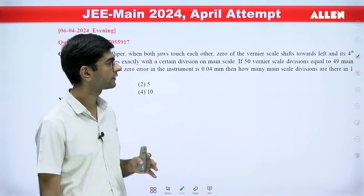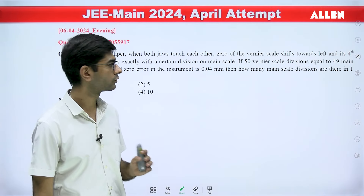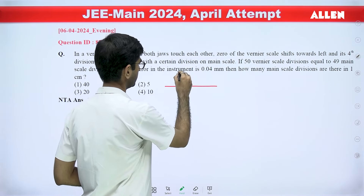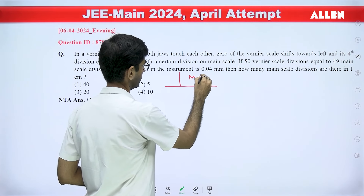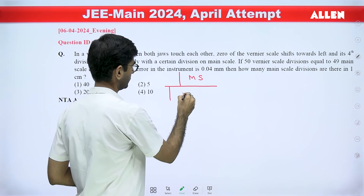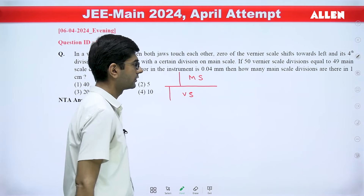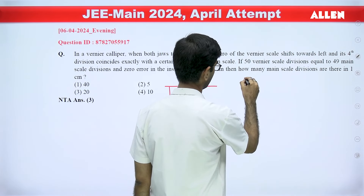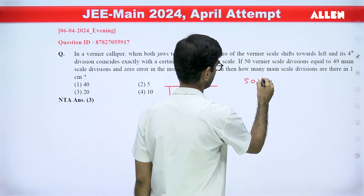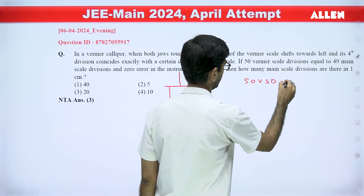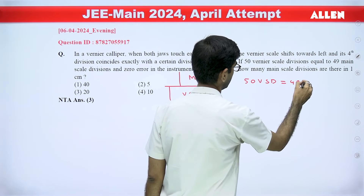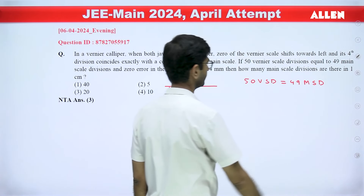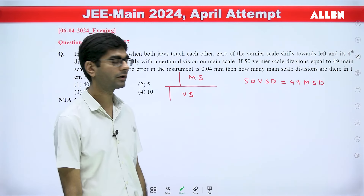It is clearly given that the vernier scale shifts towards the left, so that means there will be some negative zero error in this case. It is given that the relation between vernier scale divisions and main scale divisions is 50 VSD equal to 49 MSD.